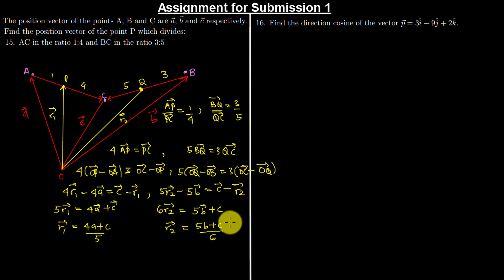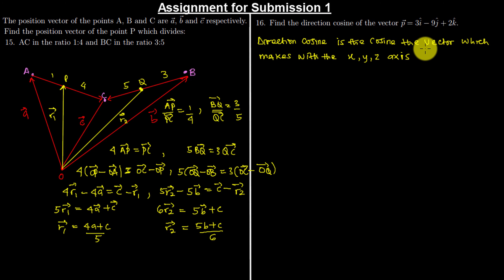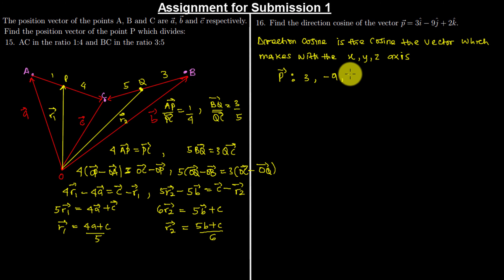So I hope you guys comprehend that question. Moving on: find the direction cosines of vector P = 3i − 9j + 2k. The direction cosines are the cosines of the angles the vector makes with the X, Y, and Z axes. To calculate them, we first find the direction ratios, which are 3, −9, 2, then divide by the magnitude.